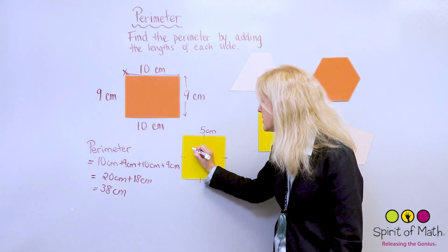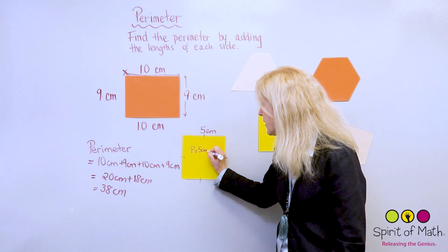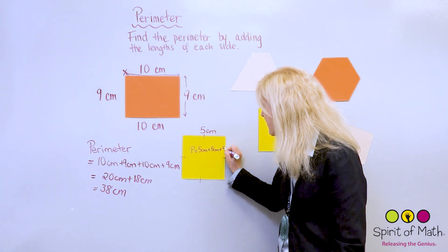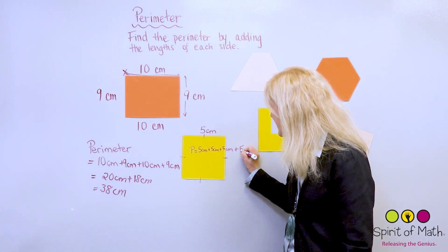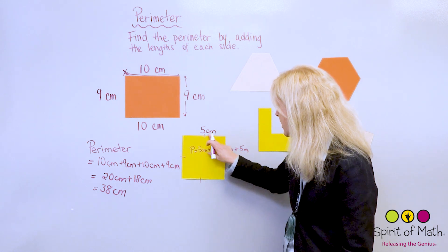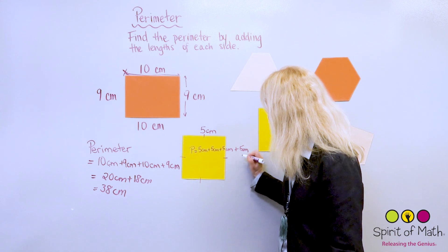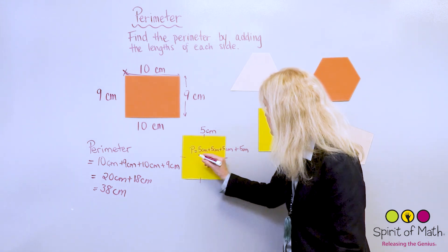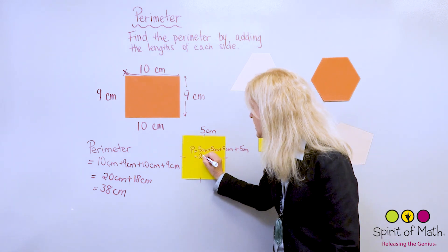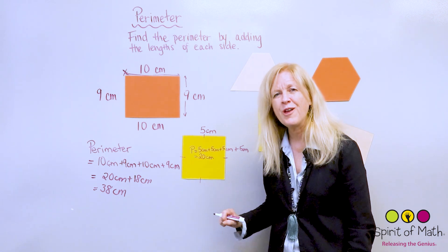I bet you could quickly add this up. So, you could say the perimeter is equal to 5 centimeters plus 5 centimeters plus 5 centimeters plus 5 centimeters. Now, let's put that cm in there for centimeters. What you have is 5, 10, 15, 20 — 20 centimeters. And I just put a P for perimeter, so you would know that.